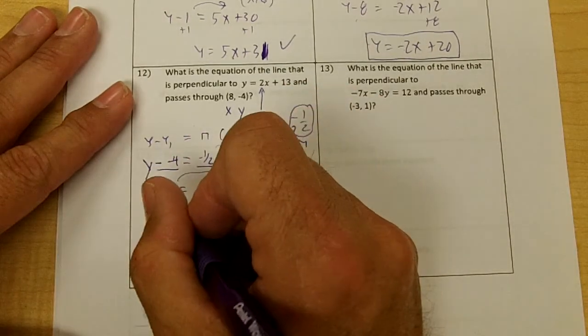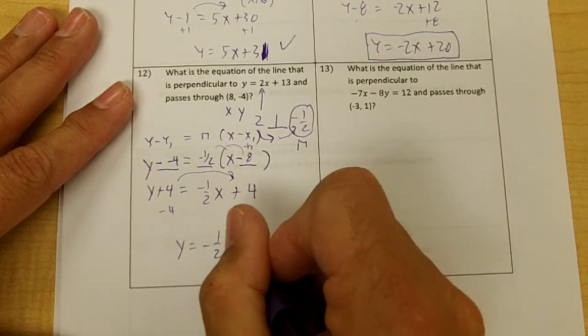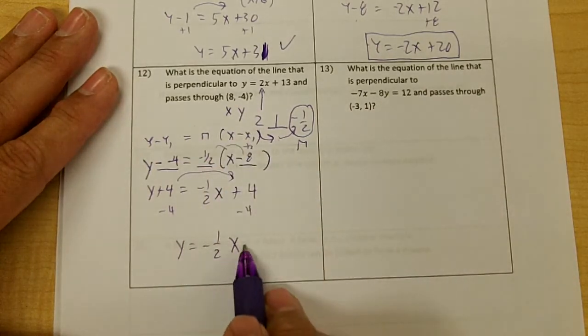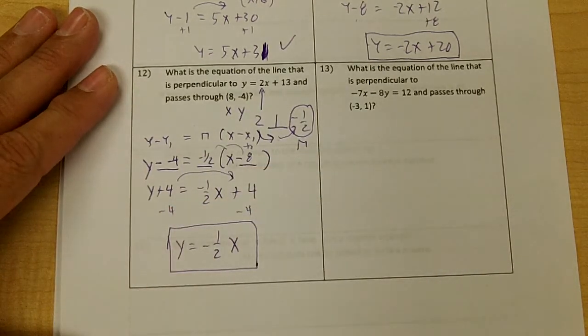I'm going to move the 4 over, and I'll get y equals negative 1 half x. And if I put 8 in here, I will get negative 4 as my answer. So this is the equation of the line that's perpendicular to it.